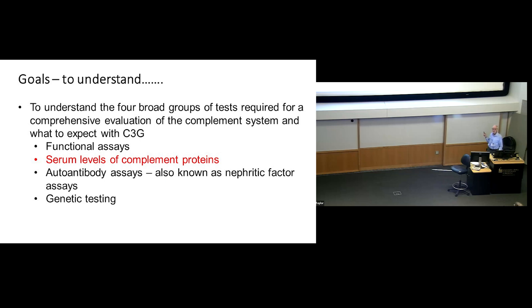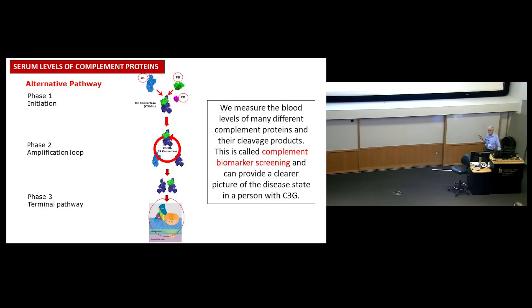Then we do biomarker analysis, and in the biomarker analysis we look at the individual components. Say for the sake of argument that your functional assay on the alternative pathway was reduced. We know it's reduced, but we don't know why, and we try to figure out why.